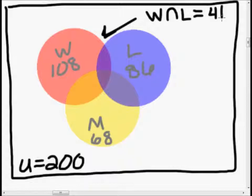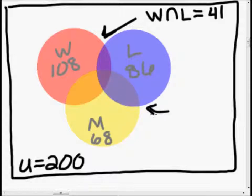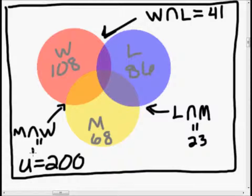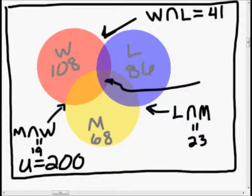23 are married and live in a large city — those are the people right here. Let's label them: large city intersection married, and that is 23. Then 19 are married and live in the west — that's this whole area right there: married intersection west, and that is 19. Finally, 12 are married and live in a large city and are in the west — that's the section in the middle where all three overlap. Let's label that: west intersection large city intersection married, and that is 12.